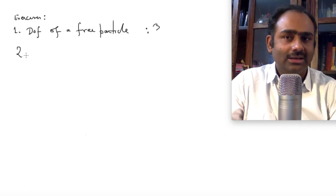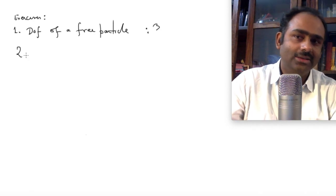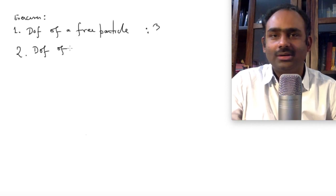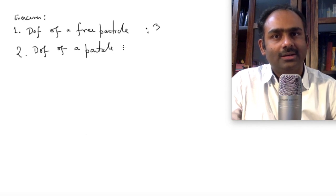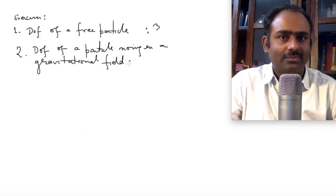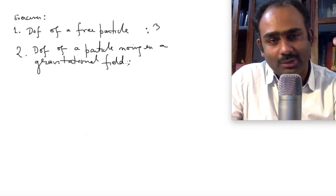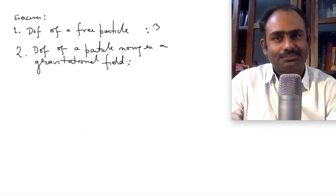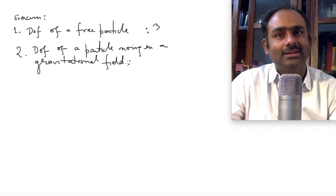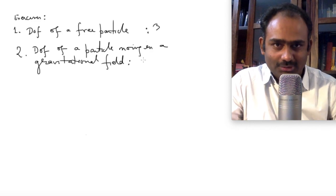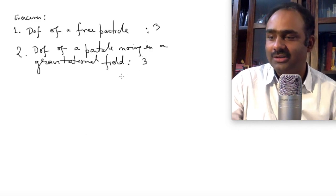Now, what are the degrees of freedom of a particle moving in a gravitational field? This could be the gravitational field of one planet, or imagine hundreds of planets around the Sun and this particle is moving among them. How many degrees of freedom does it have? The fact that there are forces acting on it does not change how many numbers you need to specify its location — it still remains three. Degrees of freedom still remains three.